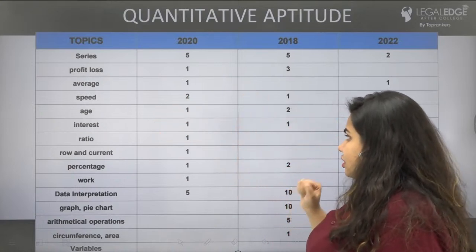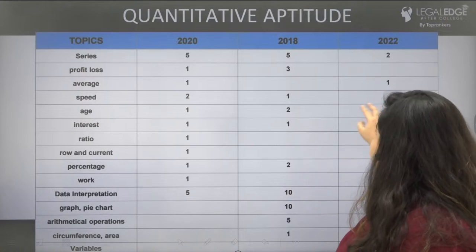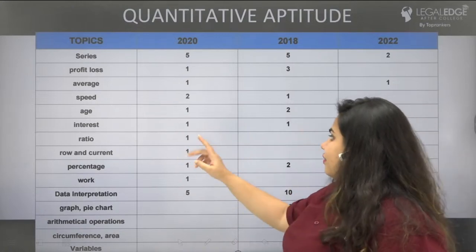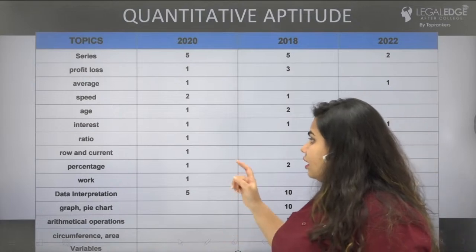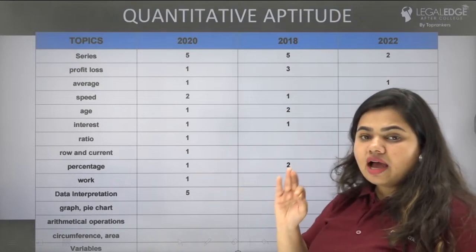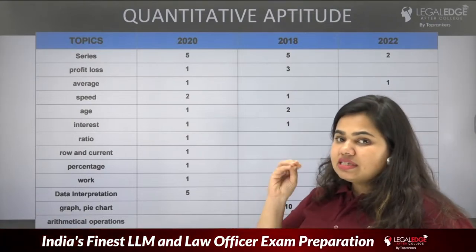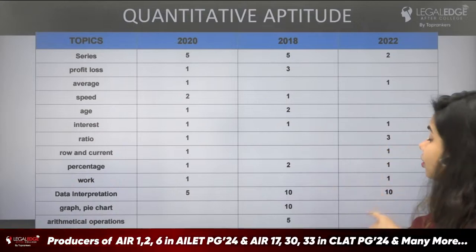For age-related questions, there were 2 questions in 2018, 1 in 2020, and none in 2022. Simple and compound interest appears every year with about 1 question. Data Interpretation is the most important part: there were 10 questions in 2018, 5 in 2020, and 10 in 2022. Percentage also appears every year with at least one question, and work-related questions appear in 2020 and 2022 as well.